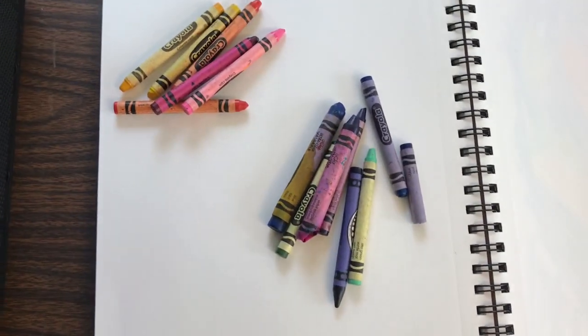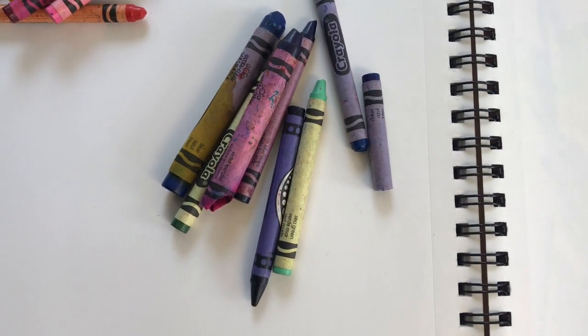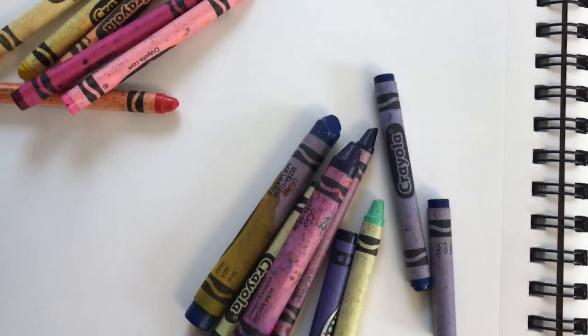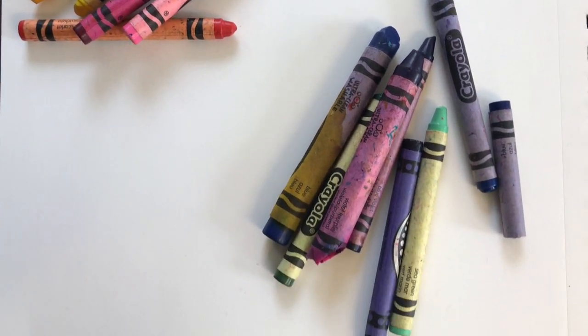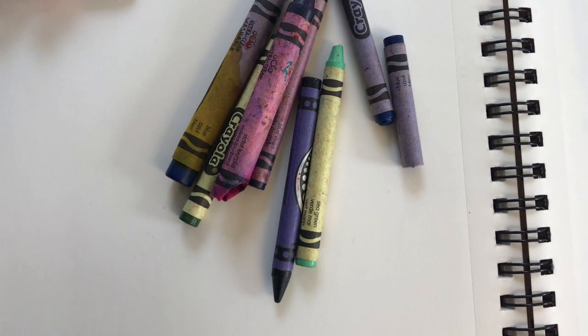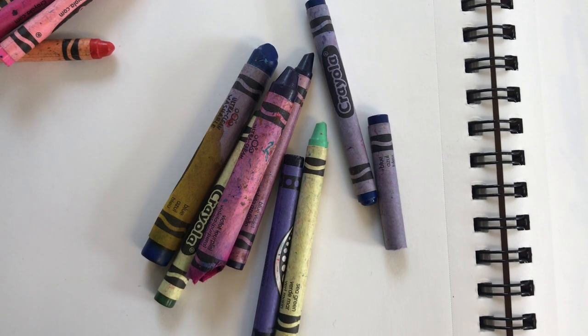So in our last class we talked about colors. We talked about our primary colors, our secondary colors, our tertiary colors. We talked about colors that are analogous and colors that are complementary. If you don't remember, don't worry, I will be going over these things again.